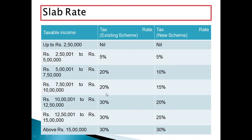Above ₹15 lakhs, it is 30% in both schemes. Now go and check your pay slip, find out your total income. For example, if your total income is ₹10 lakhs, you are under the 20% slab in the existing scheme and 15% under the new scheme — but remember, in the new scheme you cannot take 80C deductions.